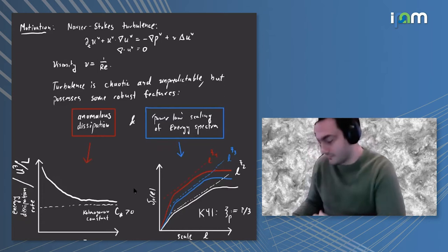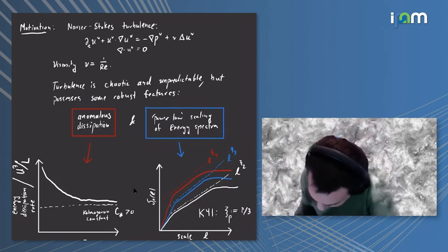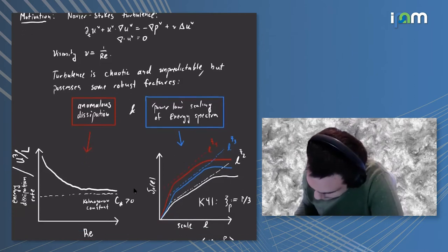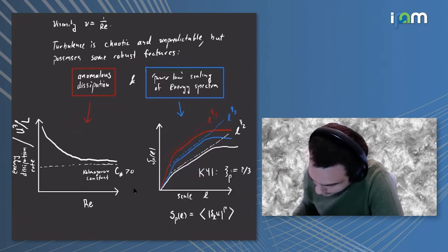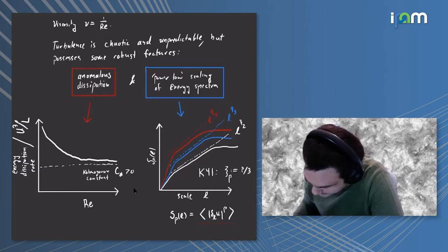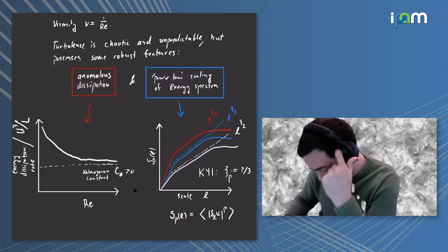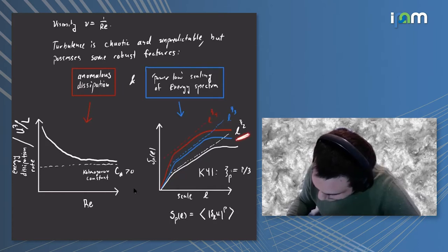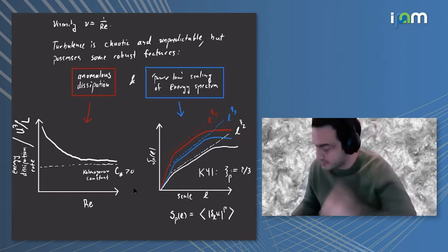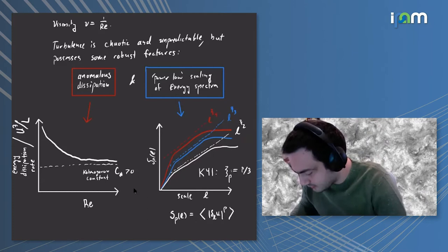This is related to the fluid developing small scale structures. One way to quantify the small scale structures emerging is through structure functions, essentially Lp norms of velocity increments which depend on a certain length scale l.